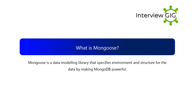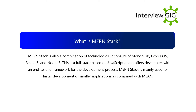What is Mongoose? Mongoose is a data modeling library that specifies the environment and structure for data by making MongoDB more powerful. What is MERN stack? MERN stack is also a combination of technologies consisting of MongoDB, Express.js, React.js, and Node.js. It is a full stack based on JavaScript offering developers an end-to-end framework. MERN stack is mainly used for faster development of smaller applications compared to MEAN.